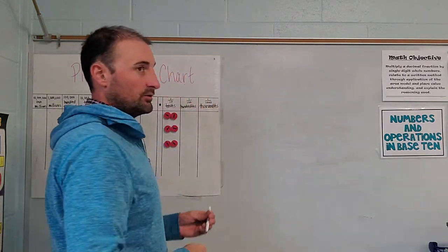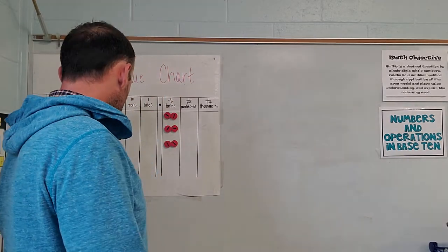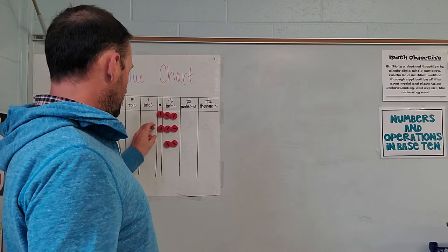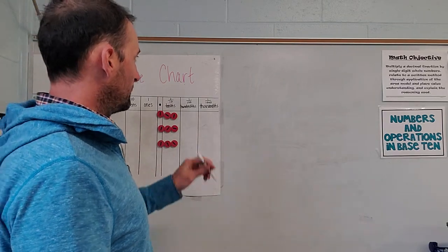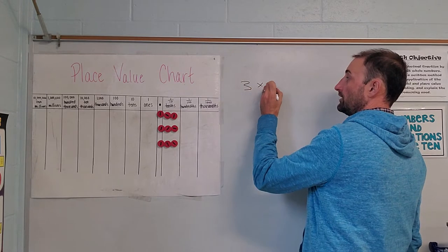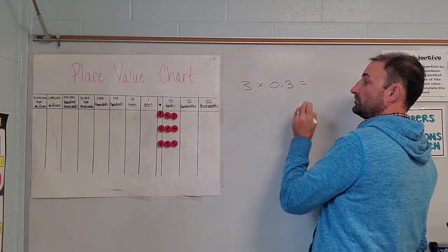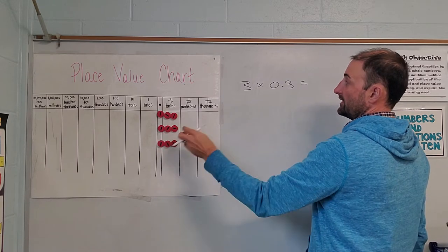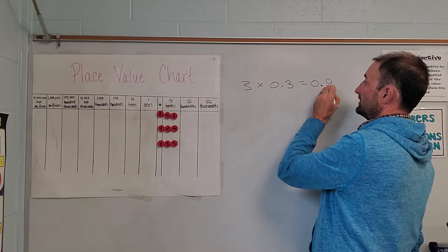If I asked you to do three groups of 3 tenths, I think we can understand how that might look. Three groups of 3 tenths is not very different. Three groups of 3 tenths — counting them up: 1, 2, 3, 4, 5, 6, 7, 8, 9. Remember, think of that as repeated addition — 9 tenths.